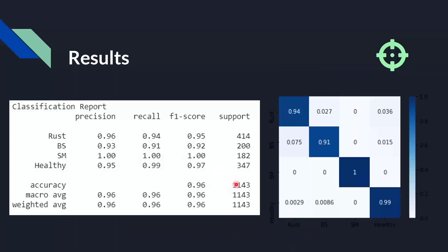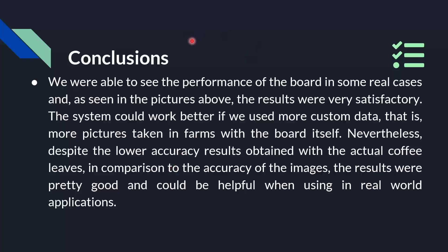These are the confusion matrix and classification report of the first model — you can see it's a pretty good result. You can see the precision, recall, and F1 score of each class, along with the number of photos in each class. In conclusion, the model performed very well on the test data. The accuracy lowers slightly on real-life data, but I think it still is a good performance and can be pretty helpful when used in real-world applications.